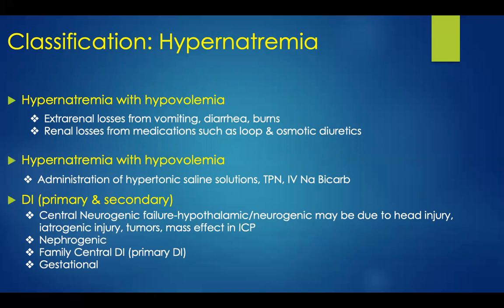There are also various types of hyponatremia with hypovolemia caused by extrarenal losses from vomiting, diarrhea, and burns, and renal losses from medications such as loop and osmotic diuretics. You can also have hyponatremia with hypovolemia caused by hypertonic saline solutions, TPN, and the administration of IV sodium bicarbonate. Diabetes insipidus can also lead to hyponatremia.